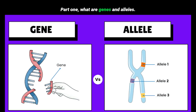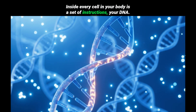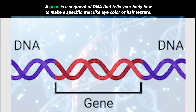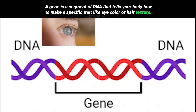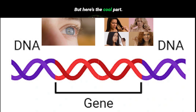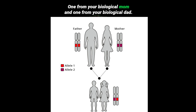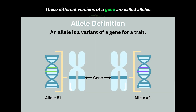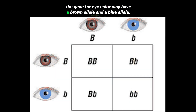Part 1: What are genes and alleles? Inside every cell in your body is a set of instructions called DNA. A gene is a segment of DNA that tells your body how to make a specific trait, like eye color or hair texture. You have two copies of every gene — one from your biological mom and one from your biological dad. These different versions of a gene are called alleles. For example, the gene for eye color may have a brown allele and a blue allele.